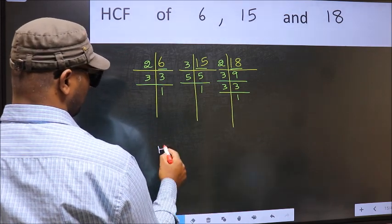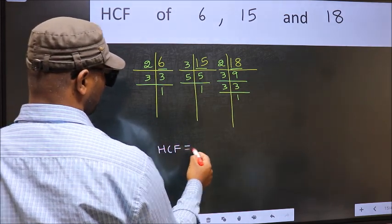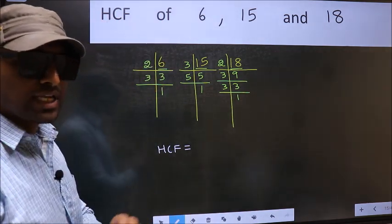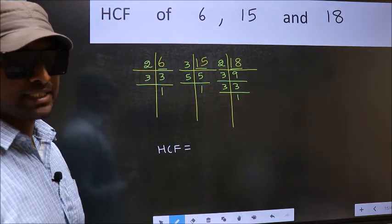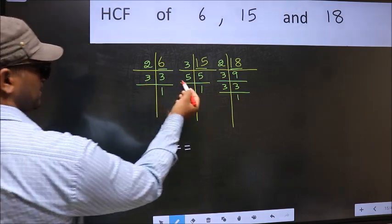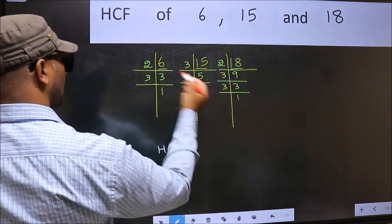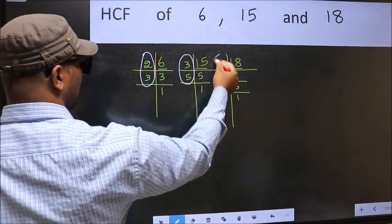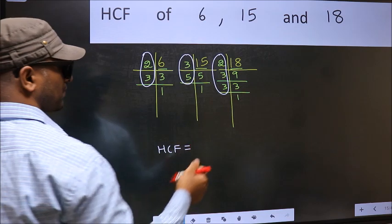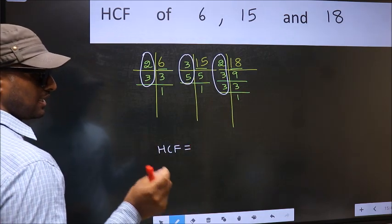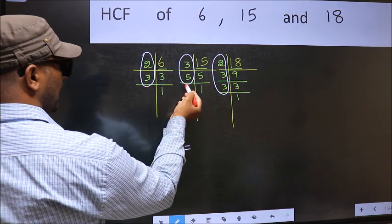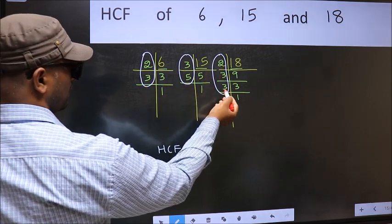Therefore our HCF is, HCF is the product of the numbers which should be present in these 3 places. That is here and here and also here. So now let us find the numbers which are present here and here and also here.